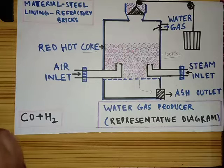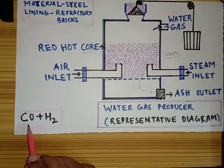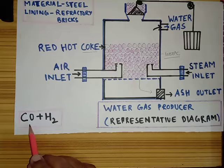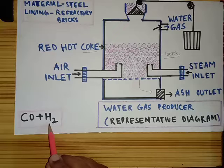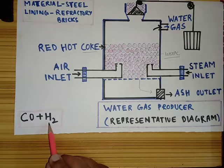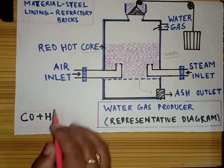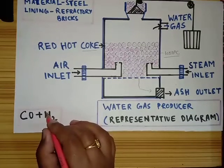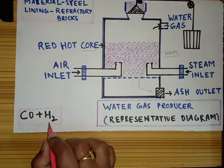Namaskar. Today's topic is water gas. Water gas is a mixture of carbon monoxide and hydrogen. The component of carbon monoxide is around 40 to 42 percent and the component of hydrogen is around 48 to 51 percent. Water gas is also known as synthesis gas and it is also known as blue gas. It is a combustible gas and around the year 1950, it was supplied through pipelines to houses. It is still important because it is used for the production of hydrogen, which has many applications in industries and in our daily life.